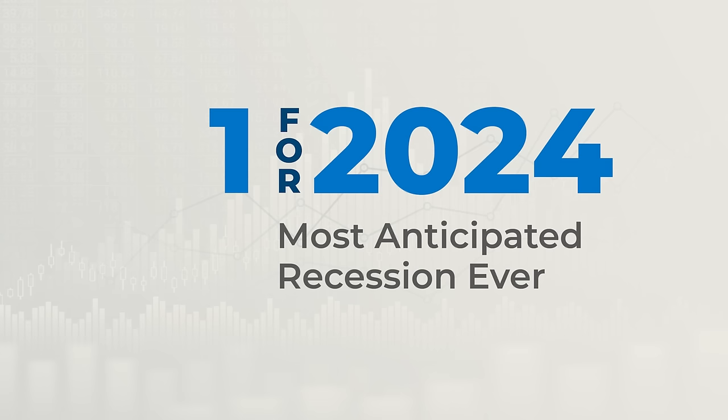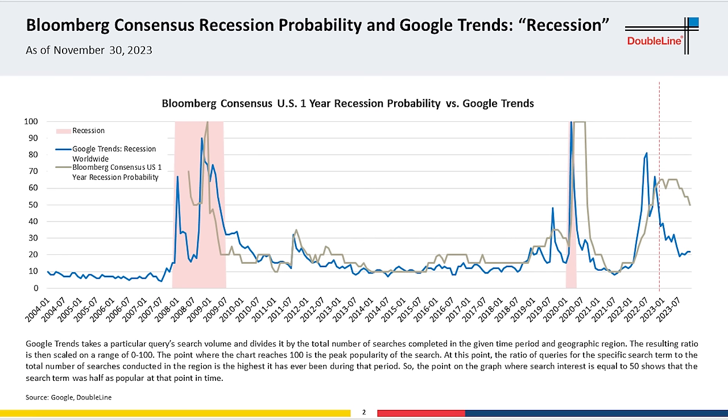Welcome back everybody to the 24 for 24, a sequel to last year's version. With me today is Ryan Kimmel and Fahy, part of the macro team here at DoubleLine. We've combed through over 8,000 slides that we presented internally to the DoubleLine team over the course of the year to try to hone in on 24 that we think are going to be the most relevant for this year.